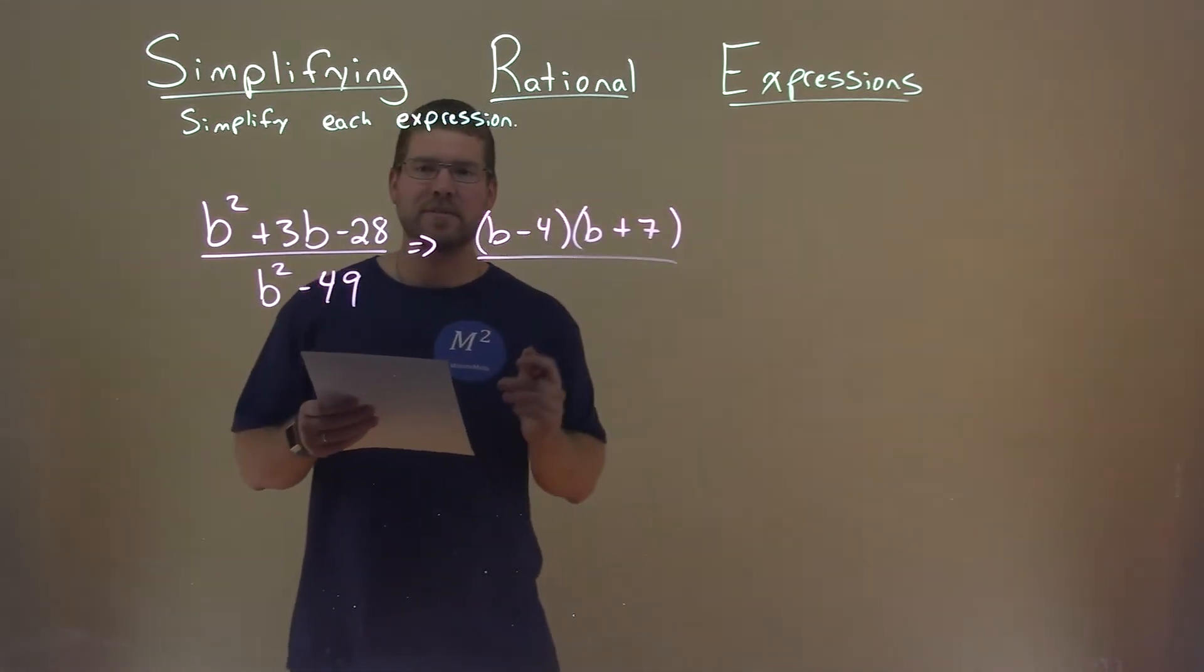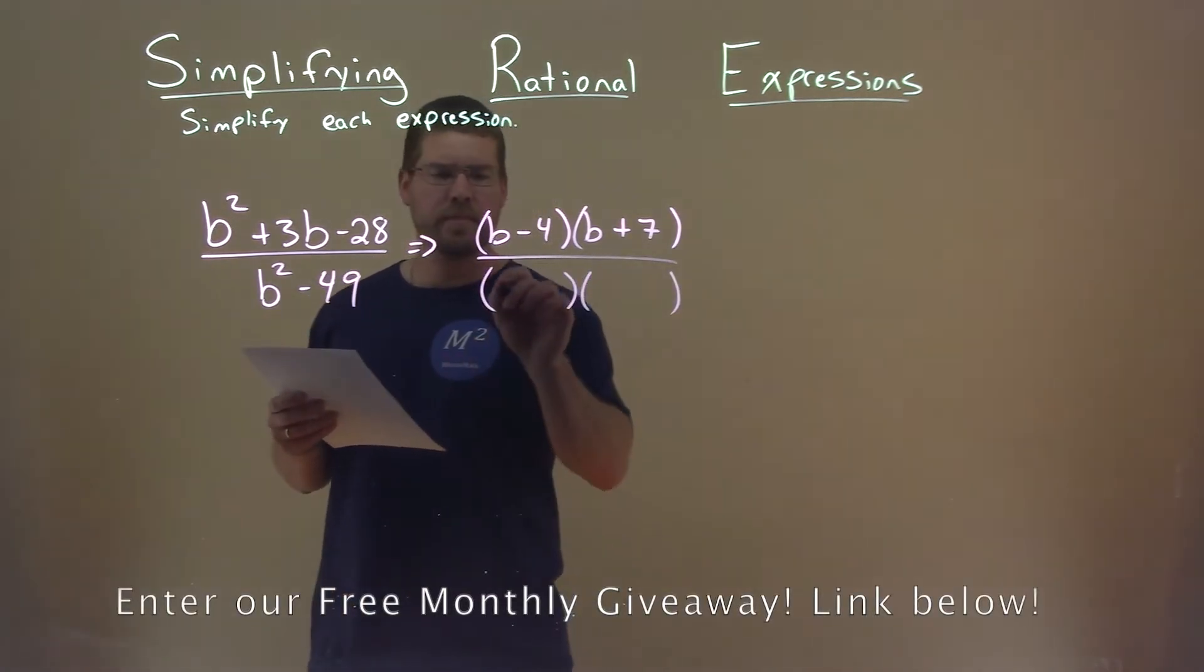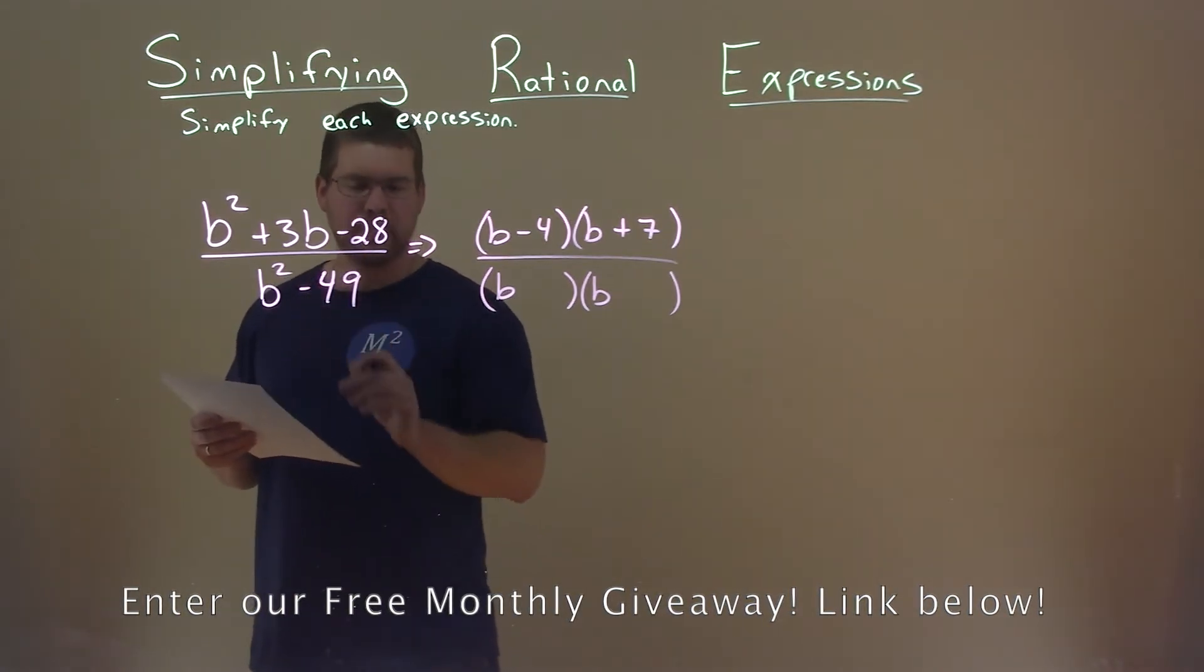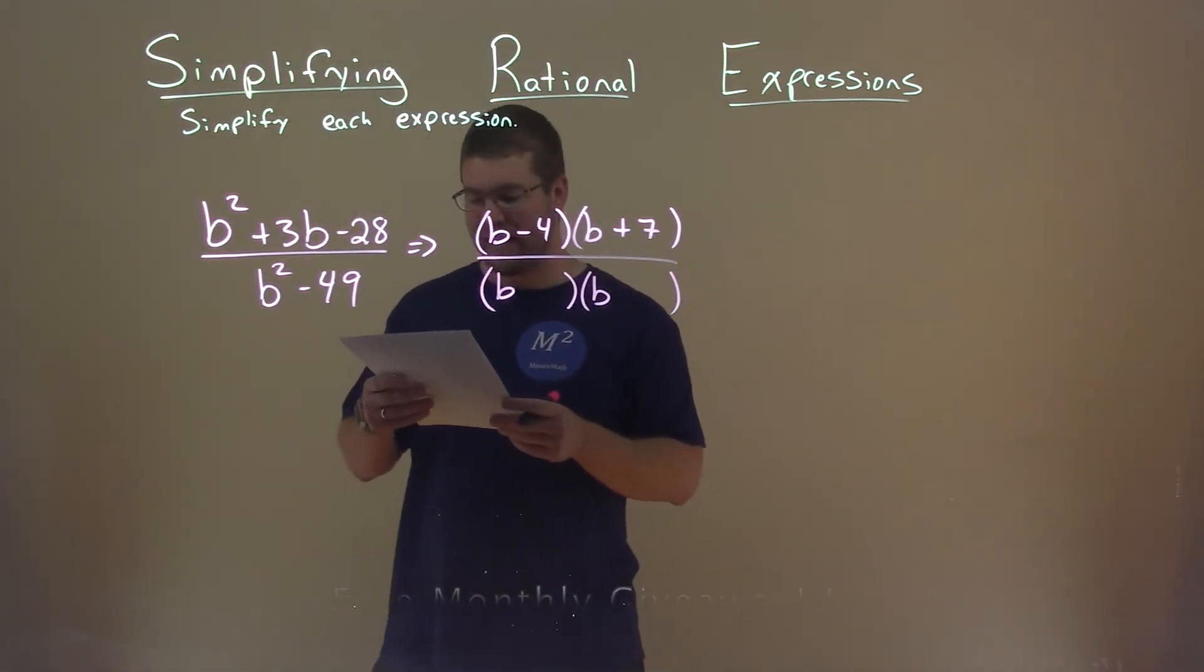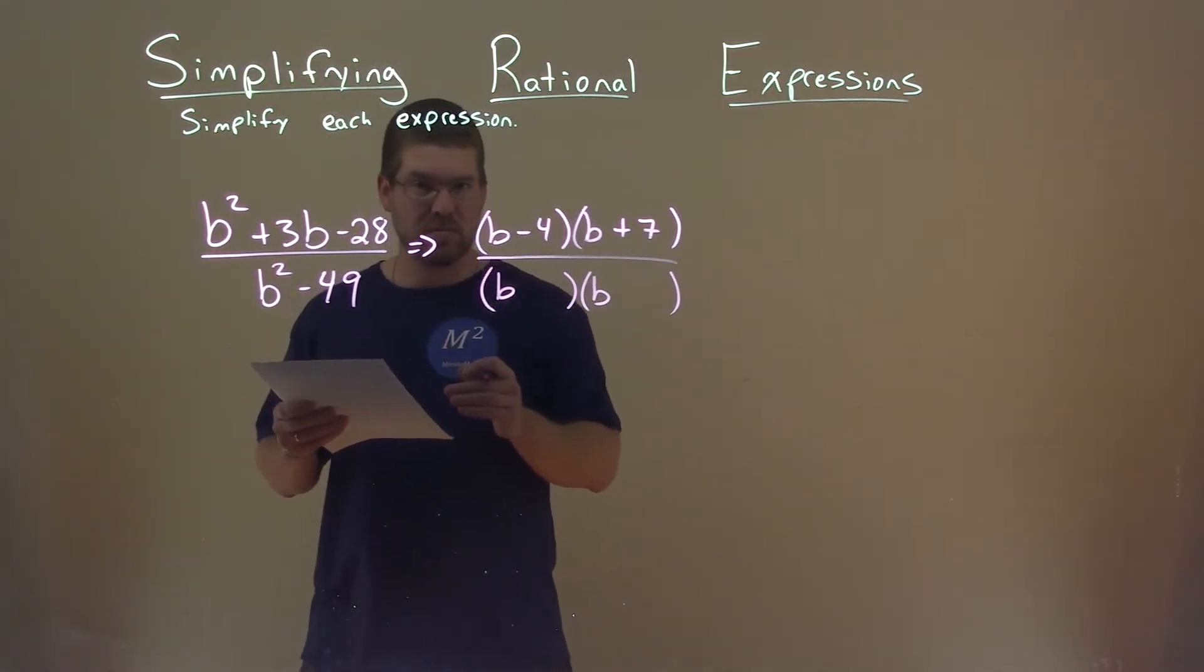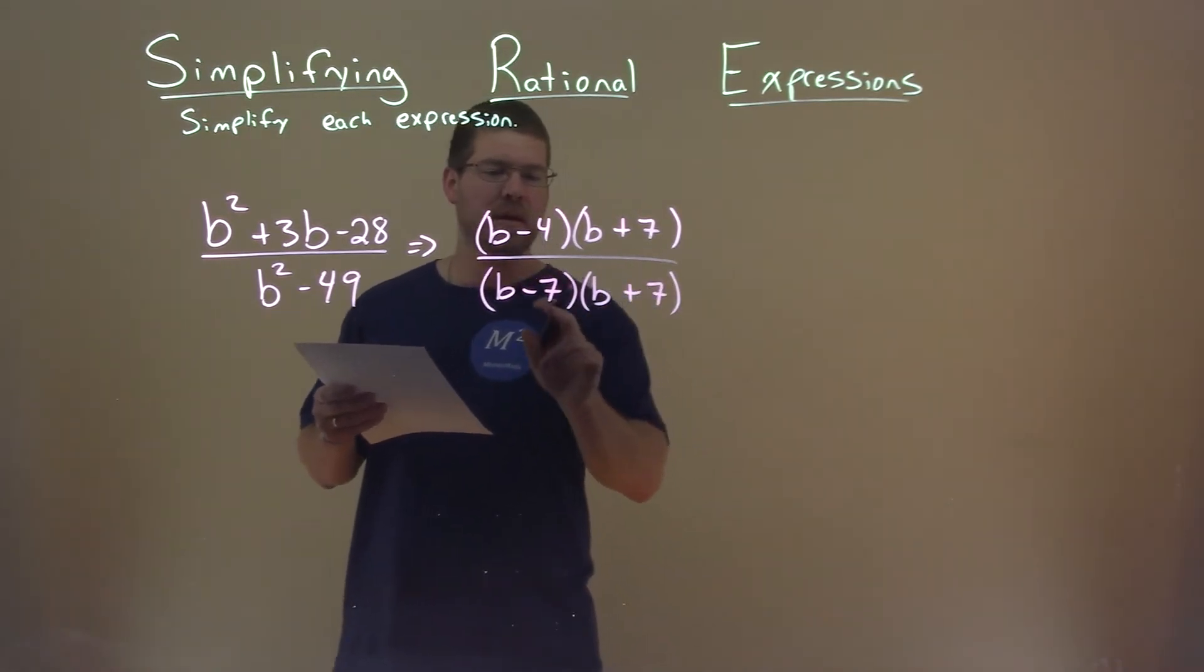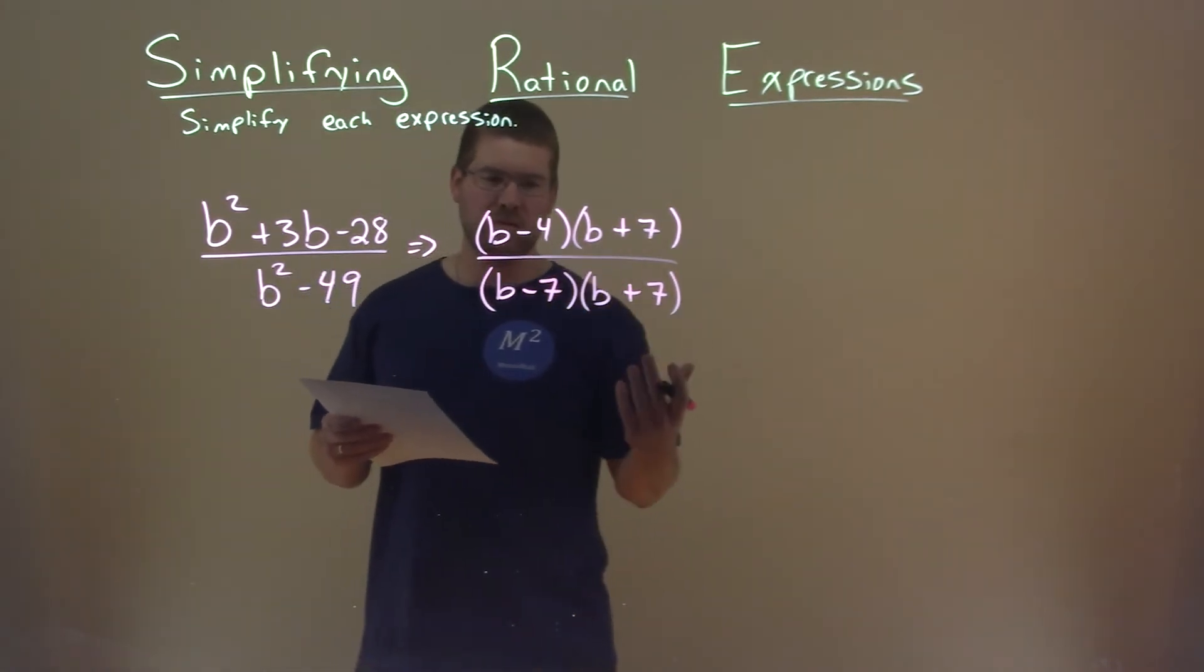Now the denominator, we want to do the same thing. Can we factor it? Well, our b value inside is 0. So we're asking ourselves what two numbers multiply to be negative 49 but add to be a 0. And that's going to be a negative 7 and a positive 7. Negative 7 times positive 7 is a negative 49. Add them together, we get 0.